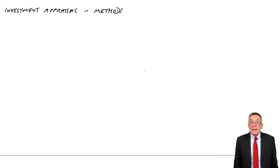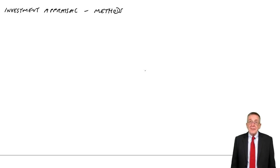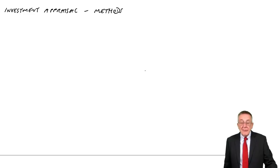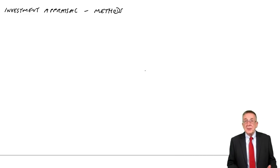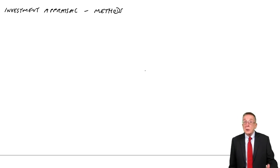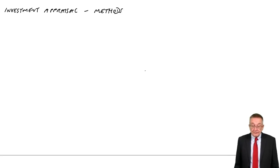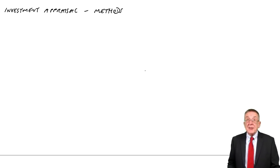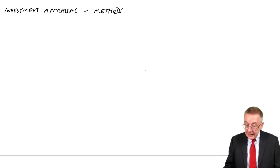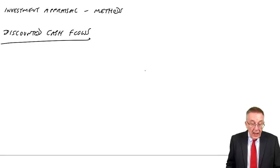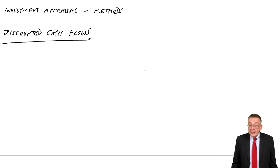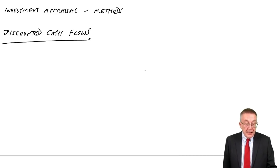Because it's revision, I want to go through it fairly quickly. If you didn't do paper F2, or if you've forgotten it, and there's anything you're at all unsure about, then go to the paper F2 lectures and watch there where I talk a lot more about why we're doing it. Anyway, let's make a start. By far the most important technique is discounted cash flow, or net present values. To hopefully revise what's involved, can you look at example one with me?